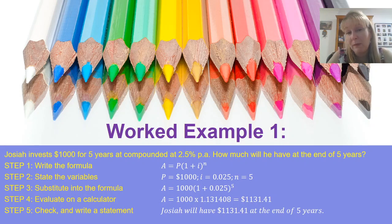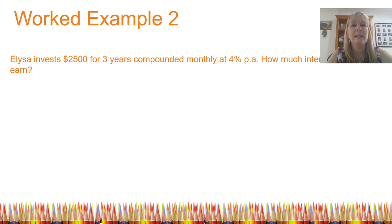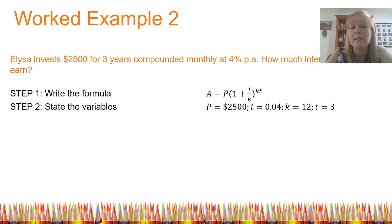Let's look at a more complex example, something with compounding periods throughout the year. Worked example two, Alyssa invests $2,500 for three years compounded monthly at 4% per annum. How much interest will she earn? Well, my very first step again is to write the formula. I could use the QCAA's formula and then make some changes to i and some changes to n and show those calculations. But I'm going to show you using k and t today. So firstly, I'm going to write the modified formula.